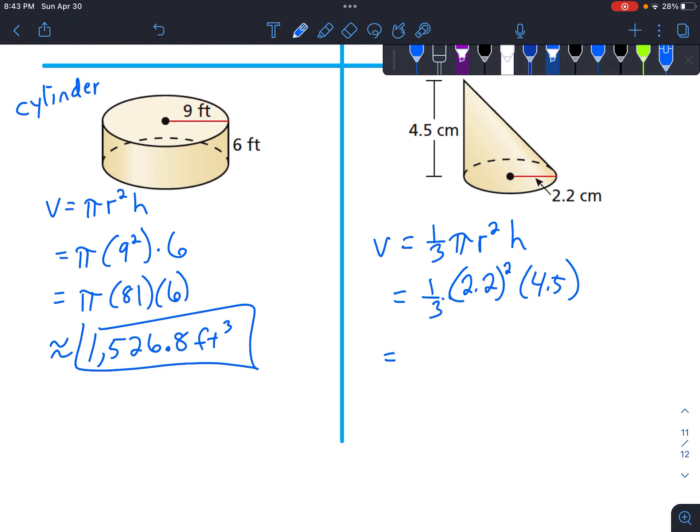I'd probably square it first just in case with your calculator. So we end up with pi times 4.84 for the 2.2 squared times 4.5. And dividing by three is the same as multiplying by one-third. Then multiply pi times 4.84 times 4.5, make sure you hit equals, and then divide by three to get about 22.8 centimeters cubed.